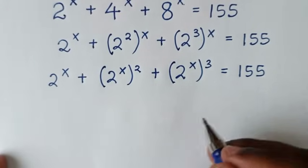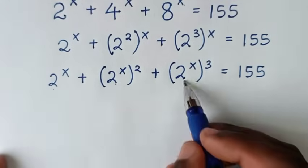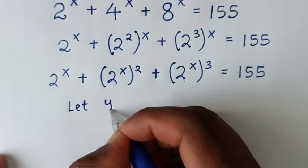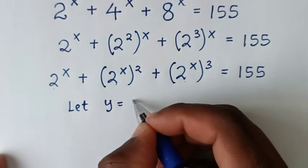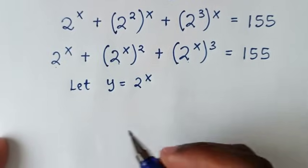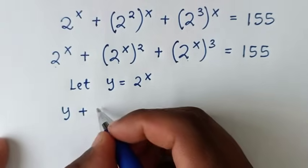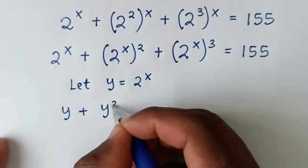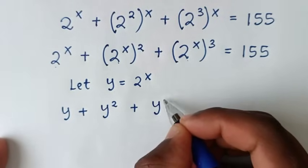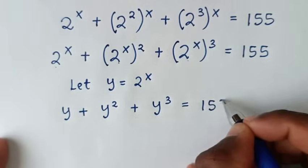In the next step, on the left side, 2 power of x is common. So we will let y is equal to 2 power of x. Then our equation will be y plus y squared plus y power of 3 is equal to 155.